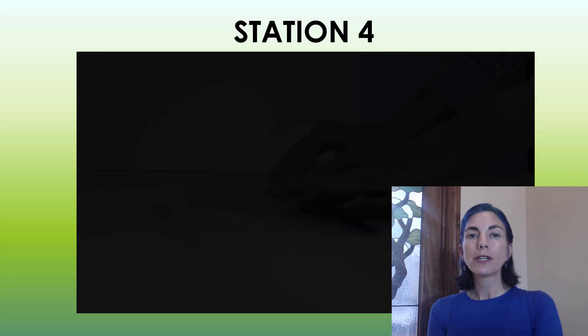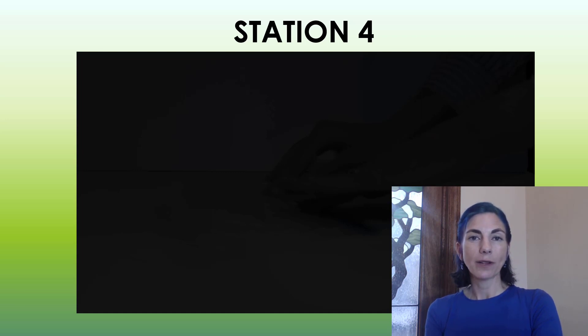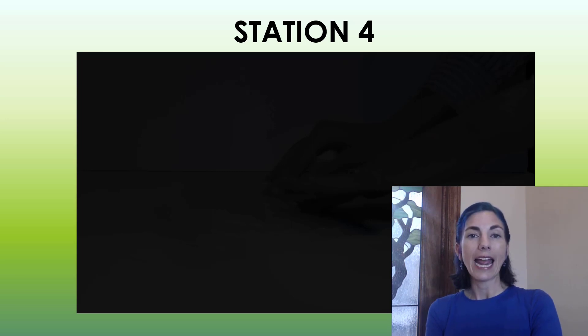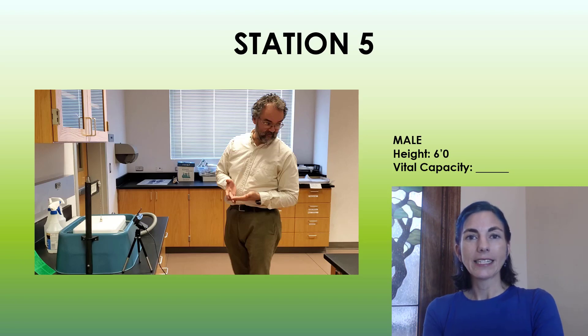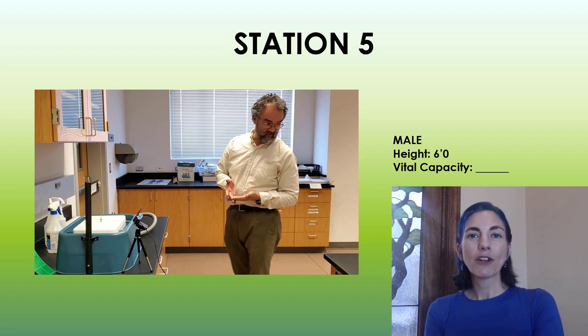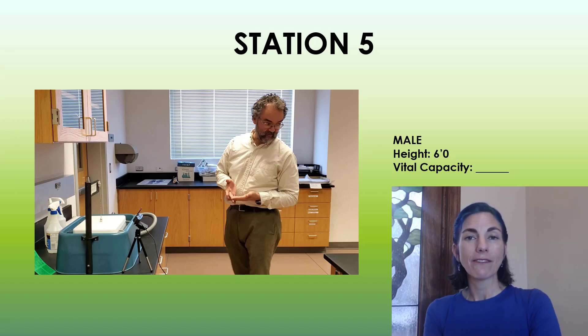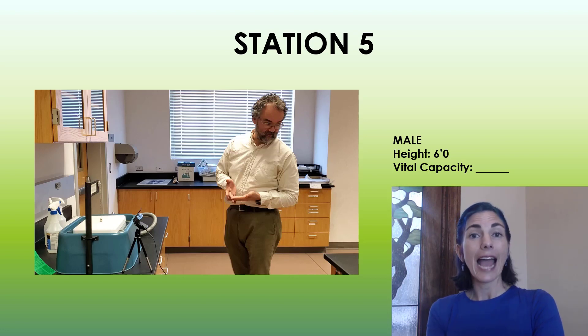Our last station looks at using a wet spirometer to measure vital capacity. In station one, we predicted vital capacity based on age, biological sex, and height, but we don't actually know if it's accurate until we measure how much air we can move in a breath. We're going to call upon Dr. Rad — he is male, about six feet, and approximately 39 years old. You can rewind to station one to see his predicted vital capacity, and then we'll look at his actual vital capacity.